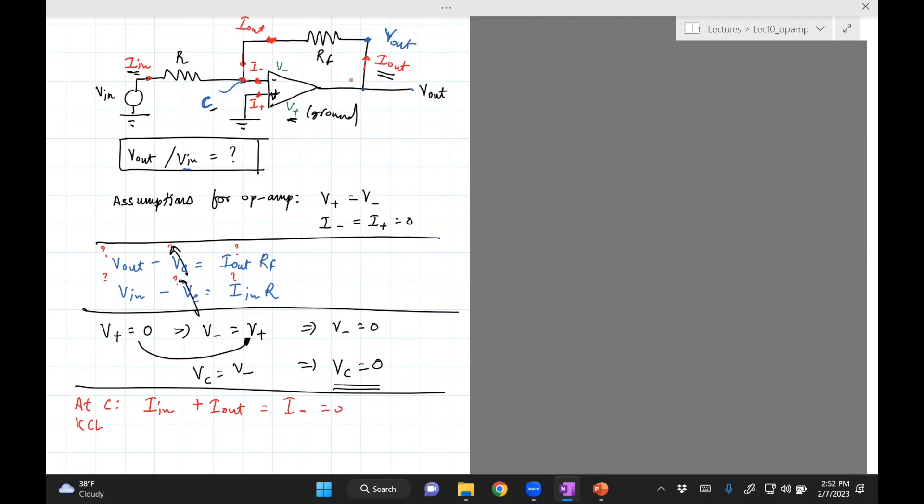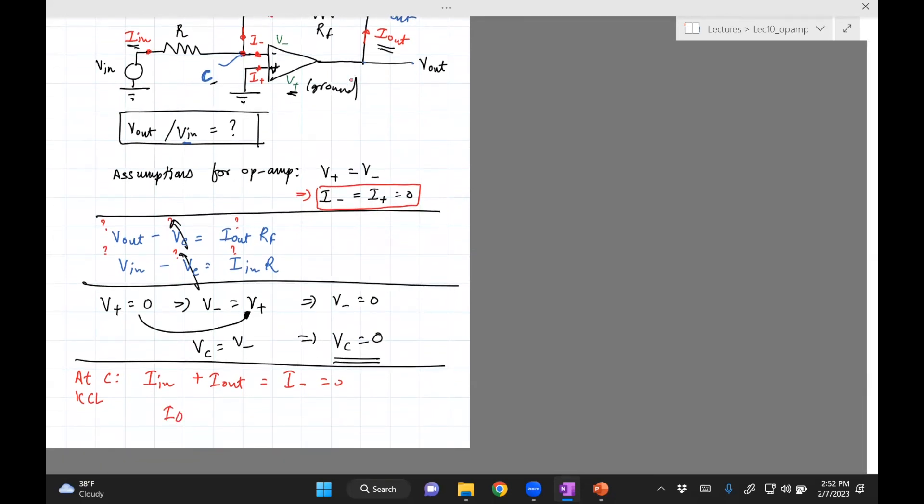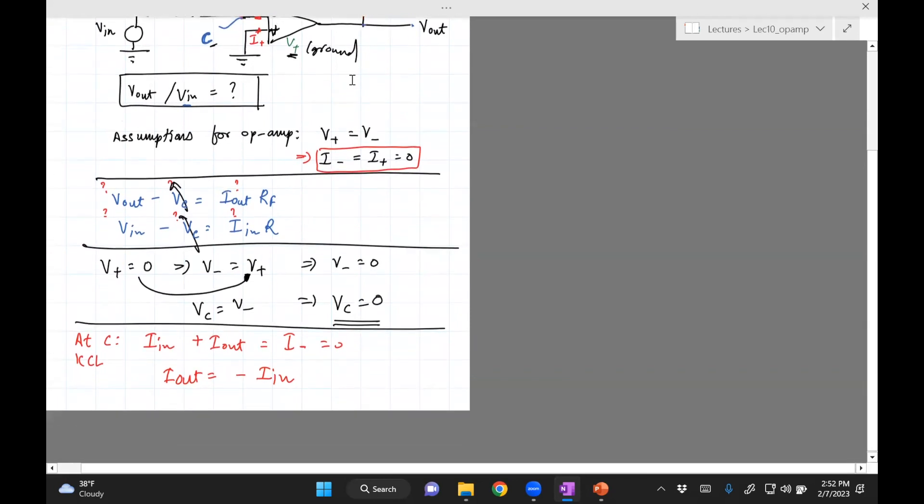But we know that I_negative is zero. This is one of the assumptions. The assumption is that the input impedance is infinity, which gives me I_negative zero. So what this means is I_out is negative I_in. With that, I think I'm ready to solve these.